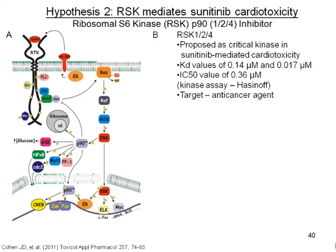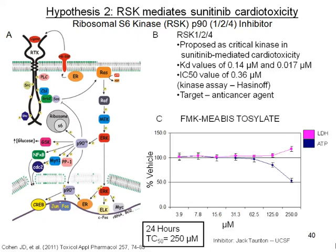RSK is also a target as an anti-cancer agent — it's overexpressed in 50% of breast cancers. So it would be valuable to know whether inhibiting RSK produces any cardiac adverse events in the clinic. I collaborated with Jack Townsend at UCSF and obtained an irreversible potent inhibitor of RSK. In an AMBIT profile screen, it is extremely selective to RSK and doesn't have any off-target effects. A dose response from 4 to 250 micromolar measuring ATP depletion and LDH gave a TC50 value of around 250 micromolar, so RSK is not a cytotoxic agent in cardiomyocytes.